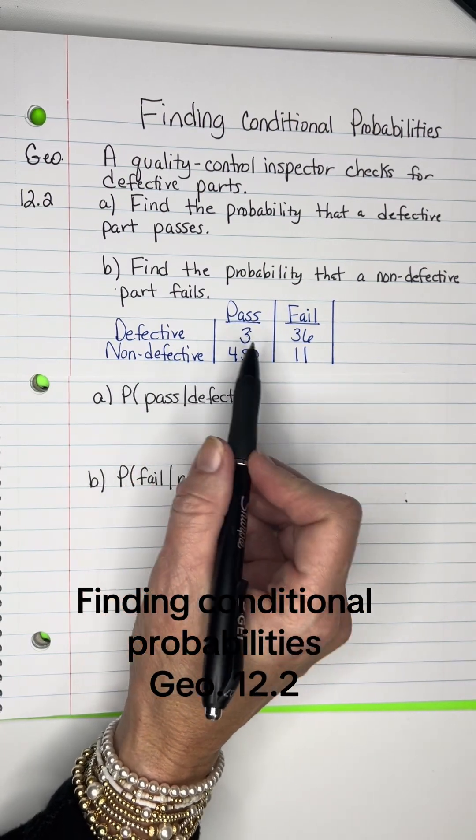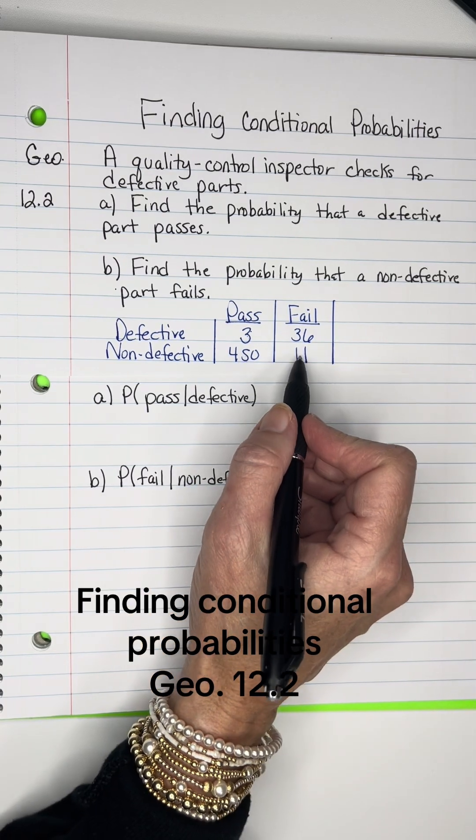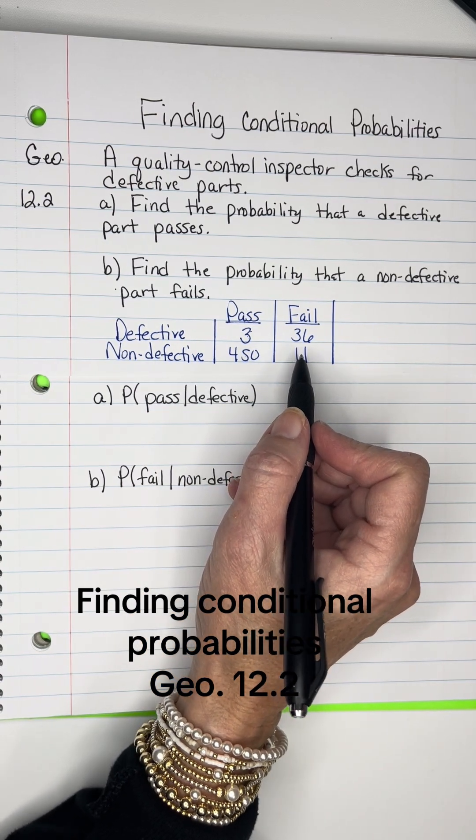Now for the non-defective ones, 450 did pass. There was nothing wrong with them and they passed, but 11 failed that were actually non-defective. So he threw them out even though they did work.